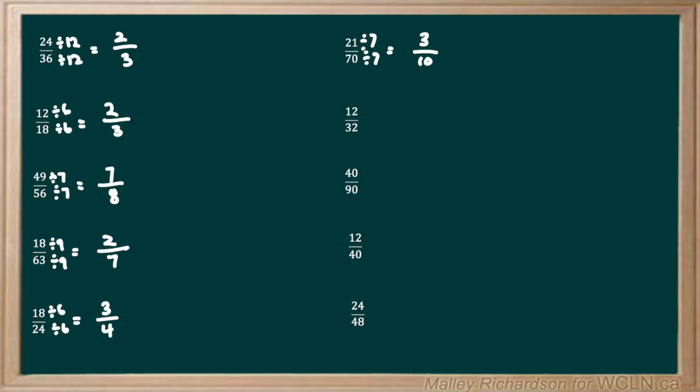Next we move on to 12 over 32. The highest factor that can go into 12 and 32 is 4. So we will divide our top and our bottom by 4. 12 divided by 4 is 3 and 32 divided by 4 is 8. And 3 over 8 is our final answer.